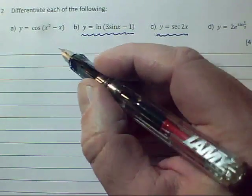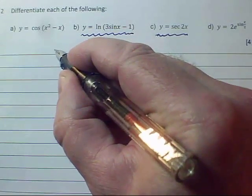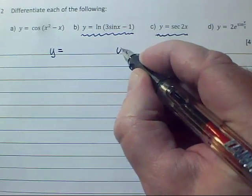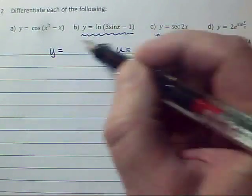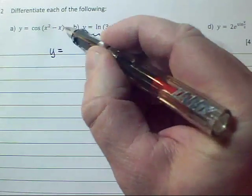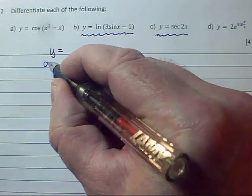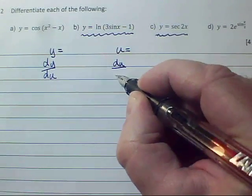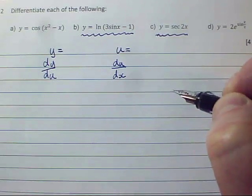So when it comes to the chain rule, remember the full way of setting it out is y equals something in terms of u, and u equals the inside function expressed in terms of x. So here's our u for the first one. Then you work out dy by du and du by dx. That's the full way of setting them out.